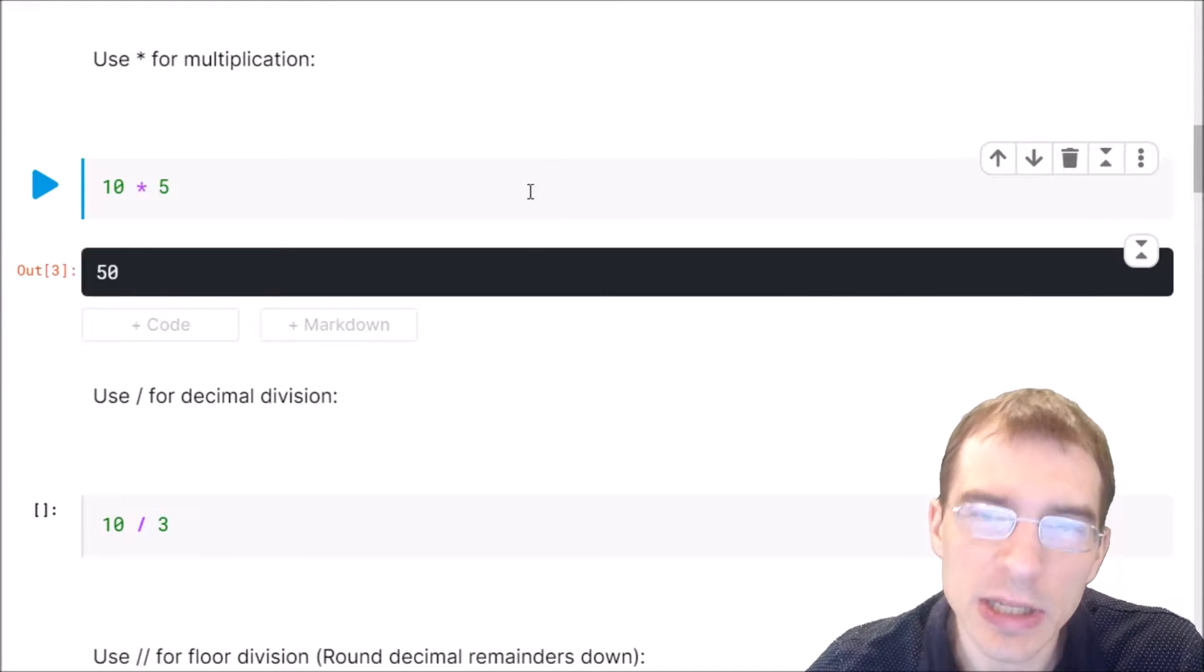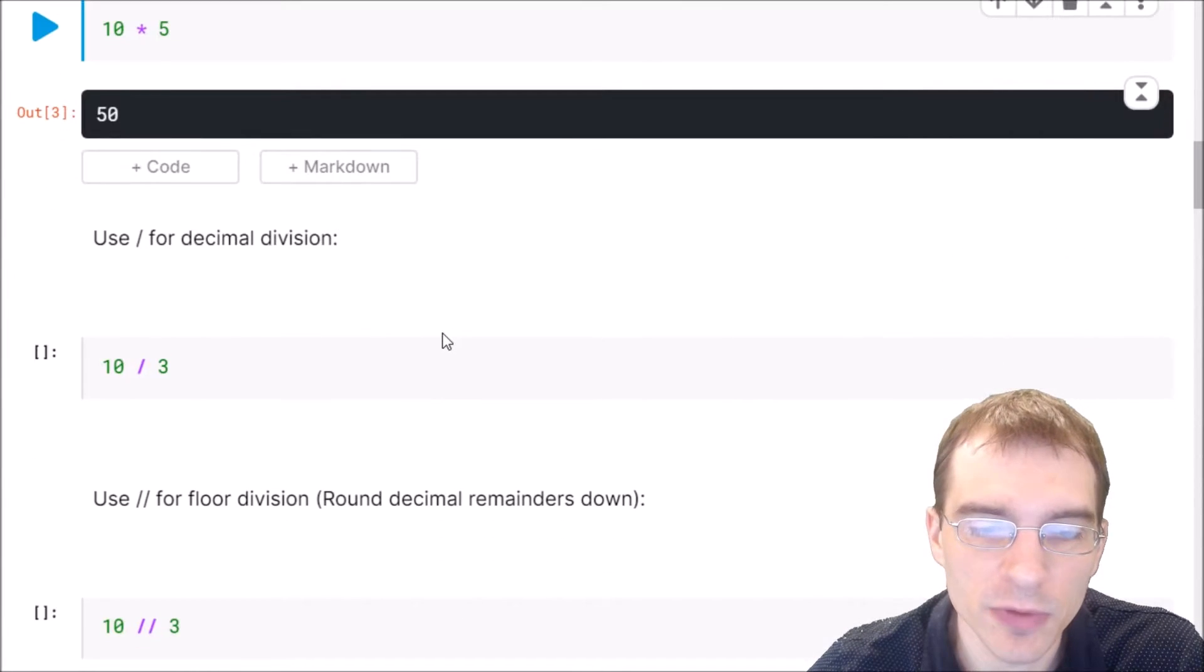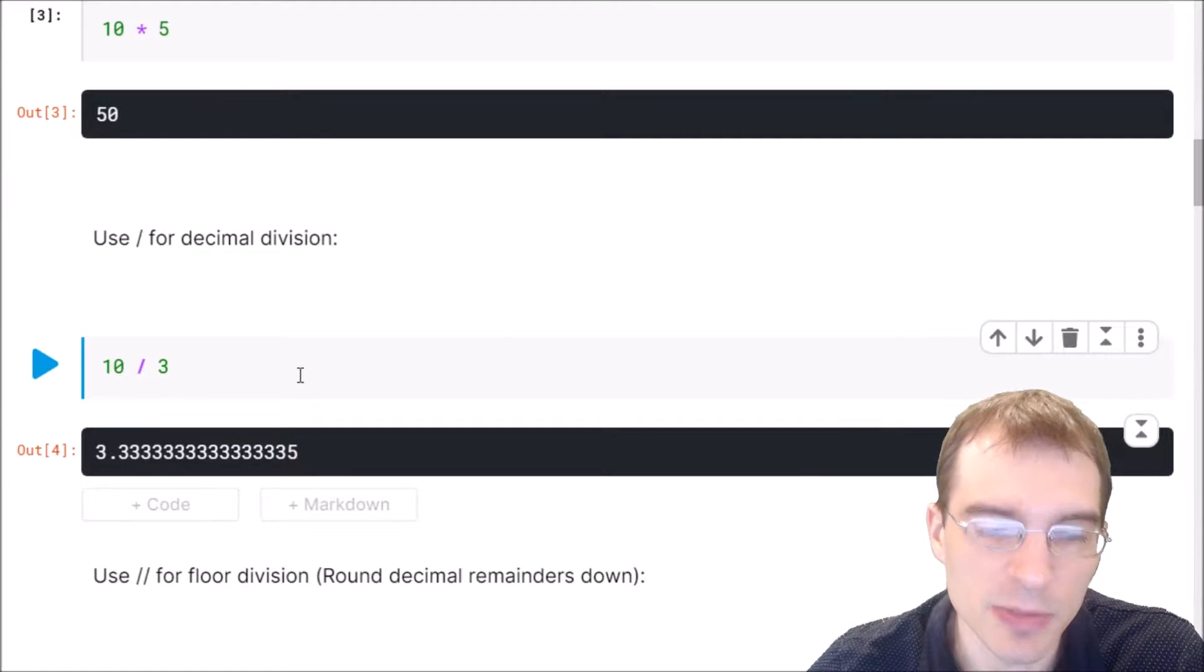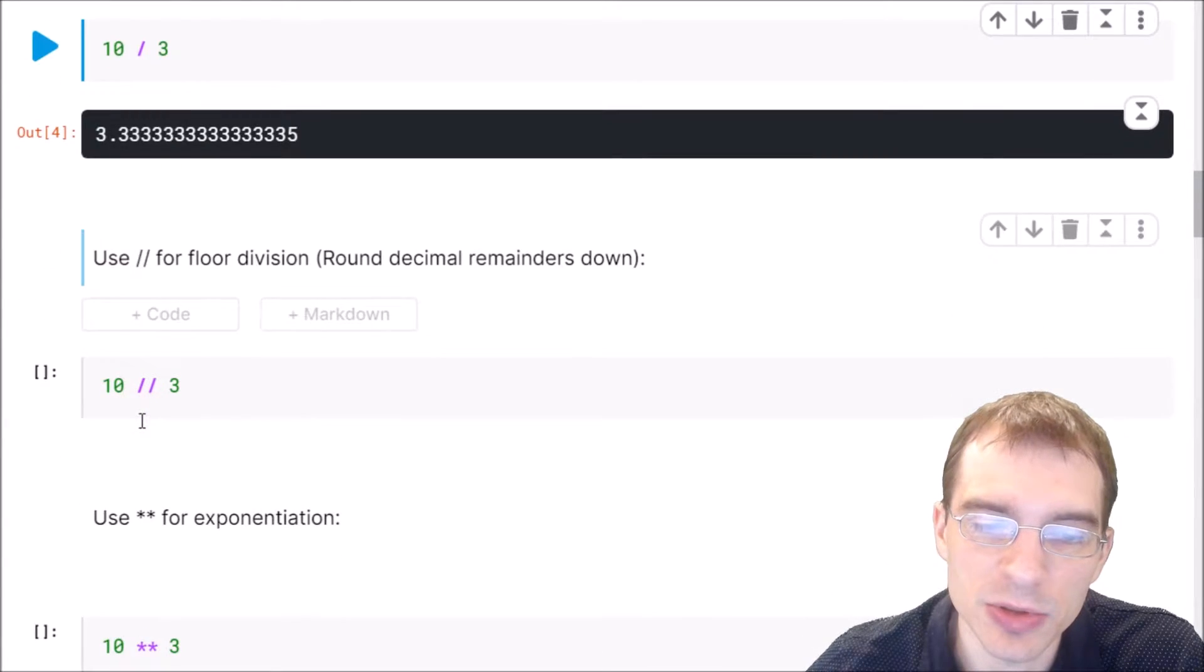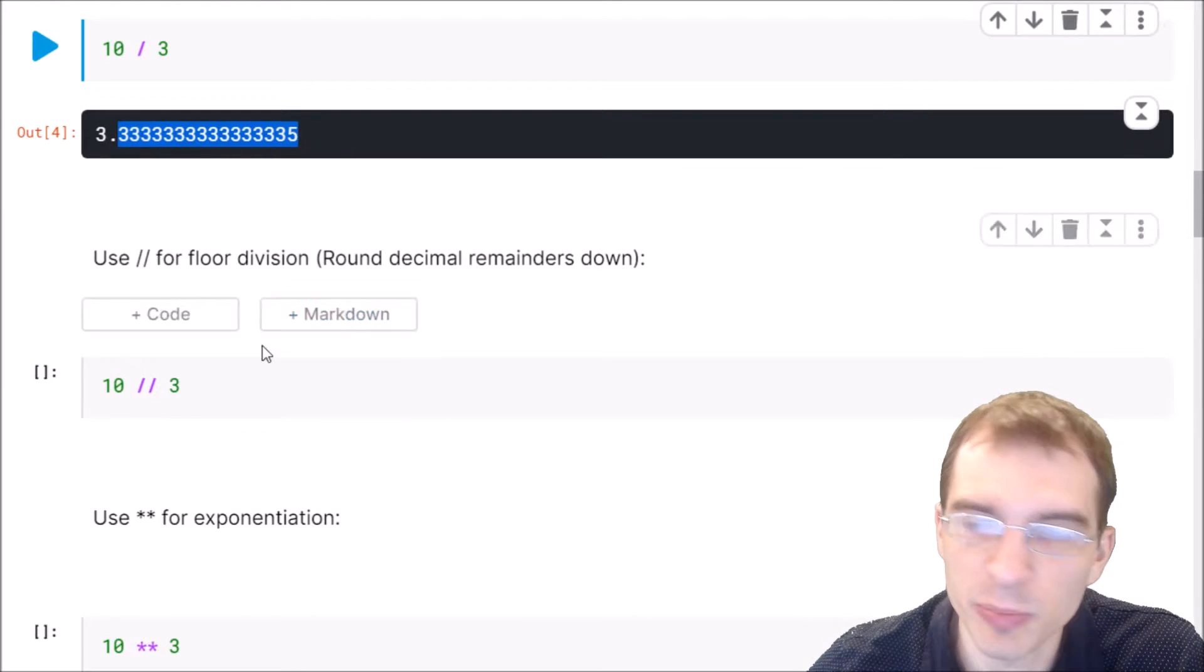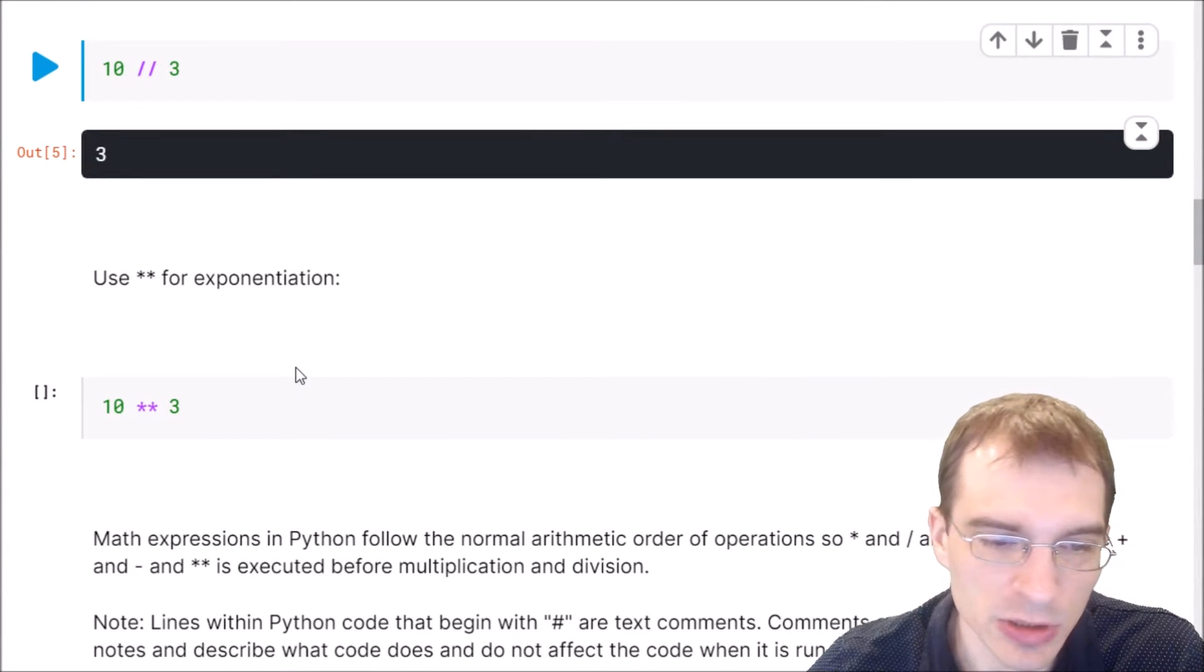For normal decimal division, you use a single slash or forward slash. So here we're doing 10 divided by 3, and this is going to be a decimal result, something like 3.33 with some number of decimal places. If you want to do floor division, which means you divide but throw away the remainder and just get a whole number, you use the double slash. So here we're doing 10 double slash 3, which means floor division. We should just get 3 and throw away the remainder of 0.333.